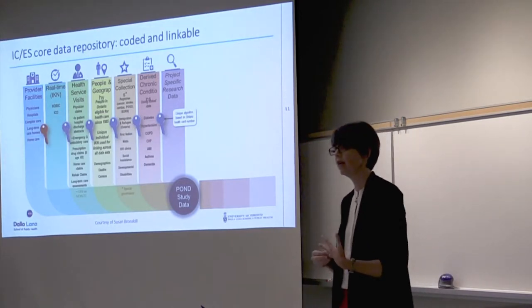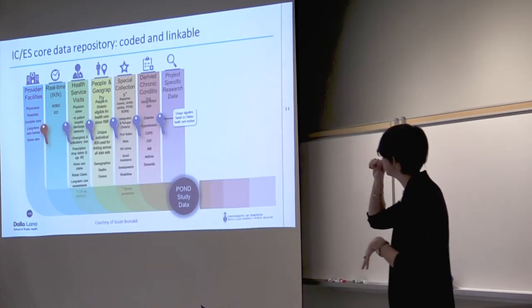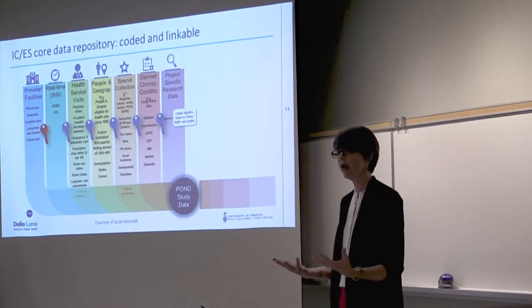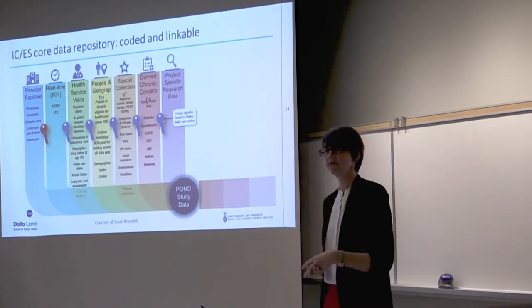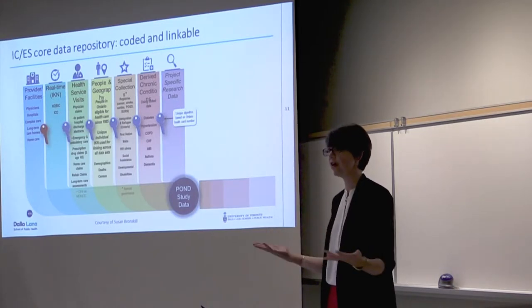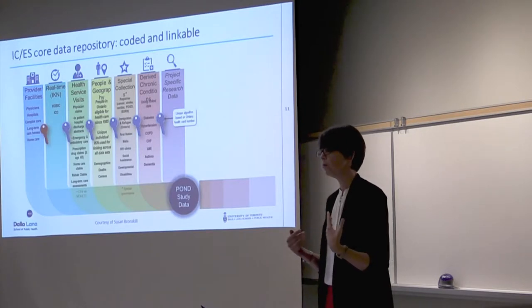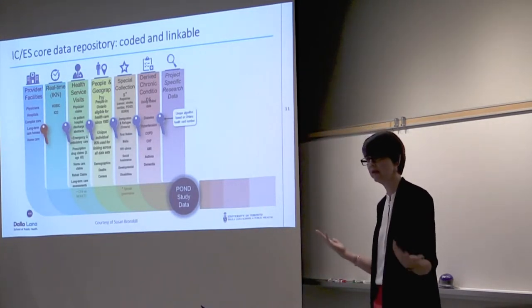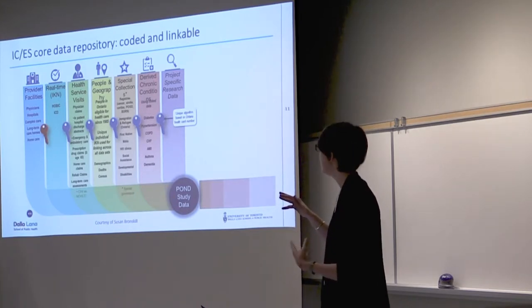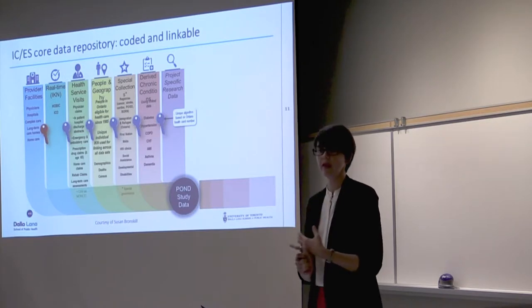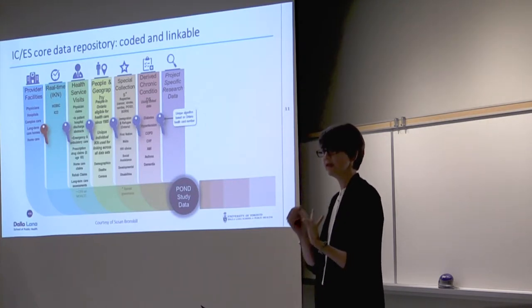The final piece — and likely the one you're not as familiar with — is the data available at ICES. This is a core data repository of Ontario health data that is coded and linkable across individuals. It includes information about any time anybody with an Ontario health card number interacts with the healthcare system — whether you see your doctor, a specialist, go to the emergency department, have a surgery, receive home care — all of these different points of interaction with the healthcare system. They have that information at the individual level. On top of that, they have special collections, like the Ontario Cancer Registry, the Ontario Breast Screening Program data, and HIV clinic data.